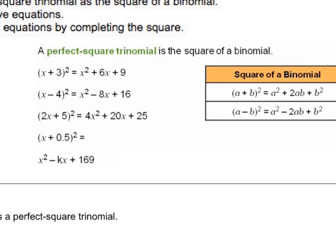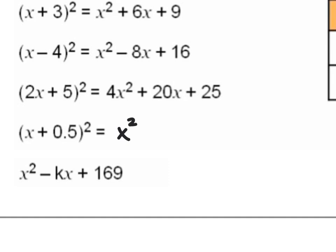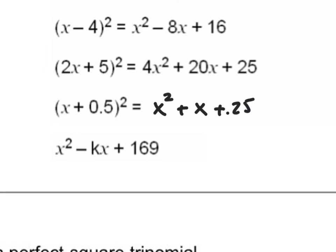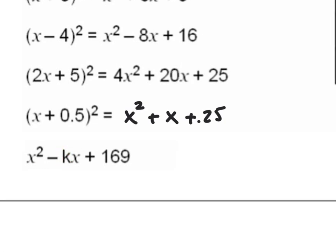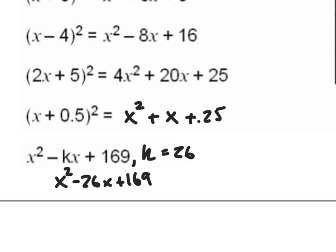If I took x plus 0.5 squared, that would give me x squared plus x plus 0.25. That is a perfect square — two numbers that add to one but multiply to 0.25, and that would be one half. And the question is: what number would go here if you had x squared minus k times x plus 169? k would have to be 26, because 13 squared is 169. So x squared minus 26x plus 169 gives us x minus 13 quantity squared.